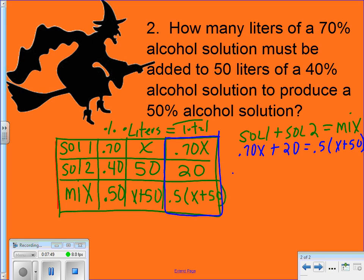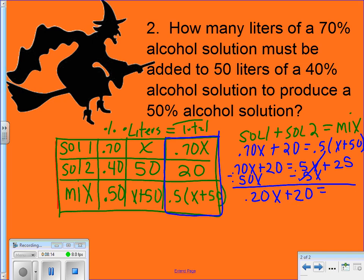Alright, 0.70x plus 20, you need to solve it from here. And I'm going to subtract my 0.5x here, which is the same thing as 0.50. So now I have 0.20x plus 20 equals 25. Subtracting 20 from both sides, that would be 0.20x is equal to 5.